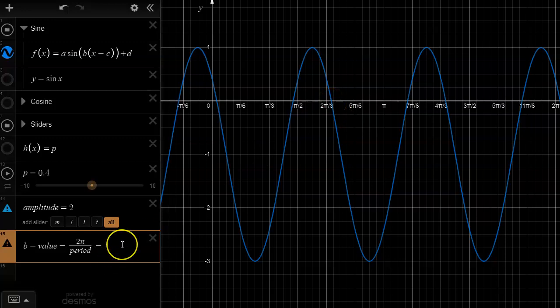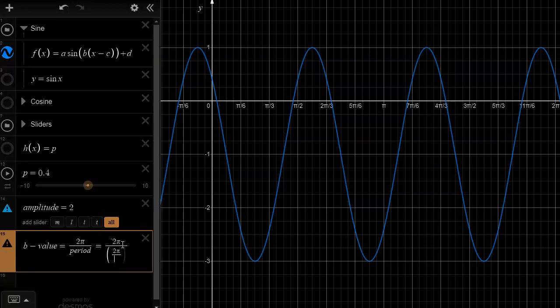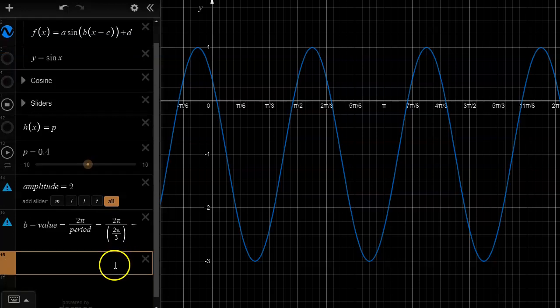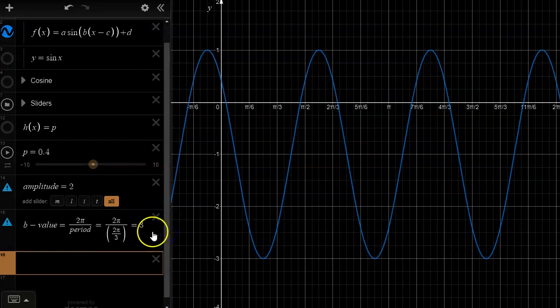For the b value I end up with 2 pi divided by 2 pi over 3. That leaves me with a b value of 3. I'm going to skip the c value for now. Save the best for last.